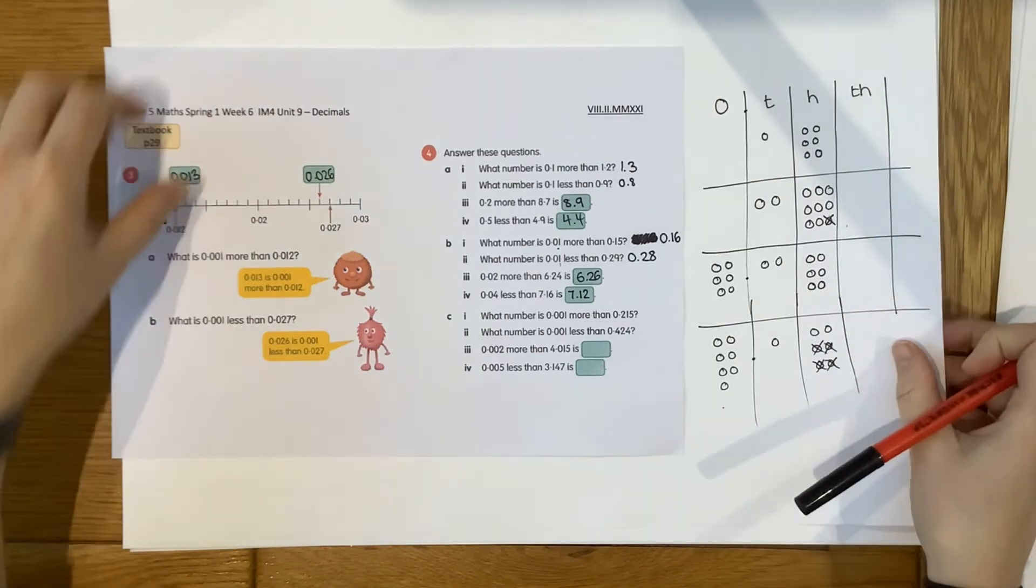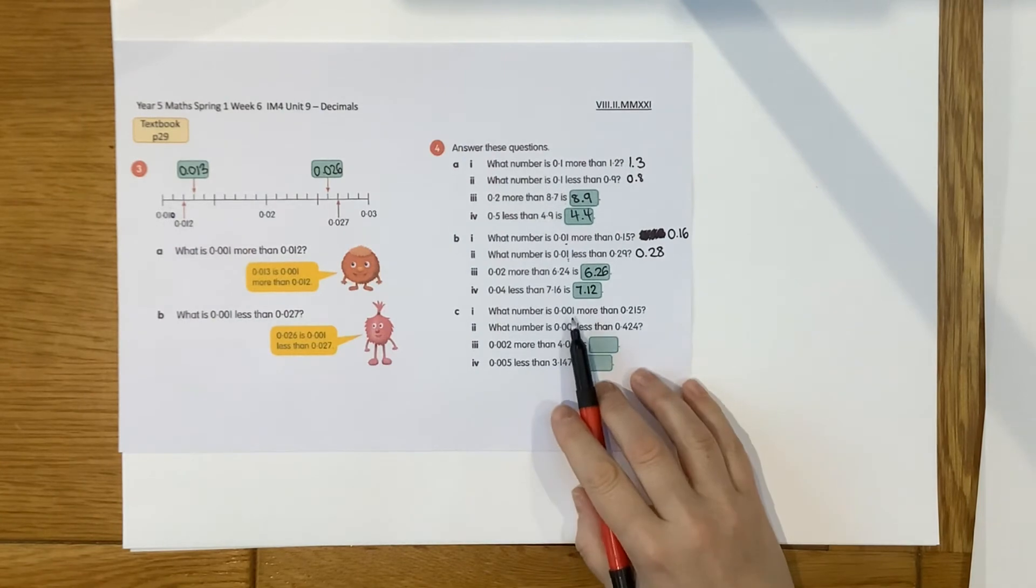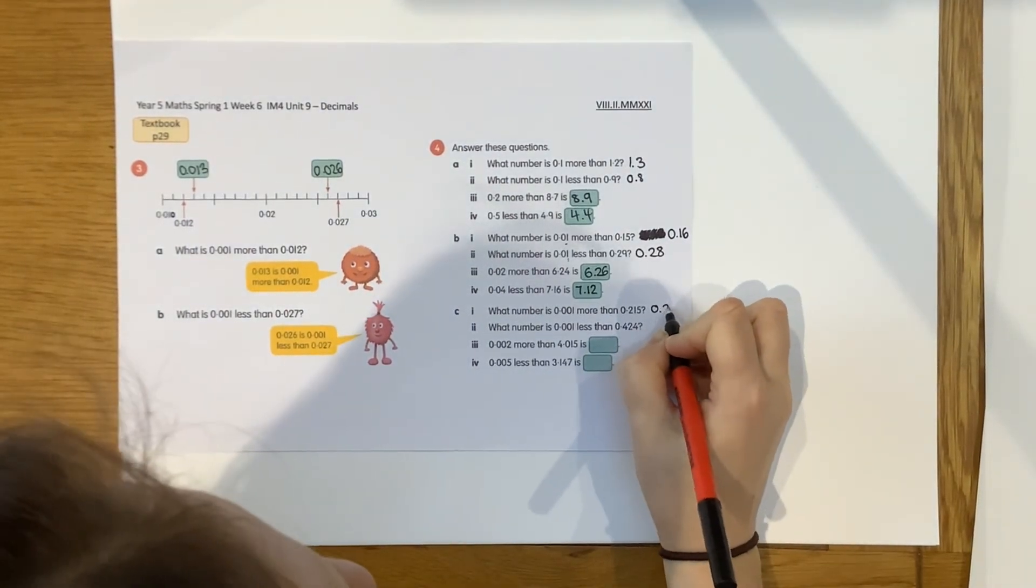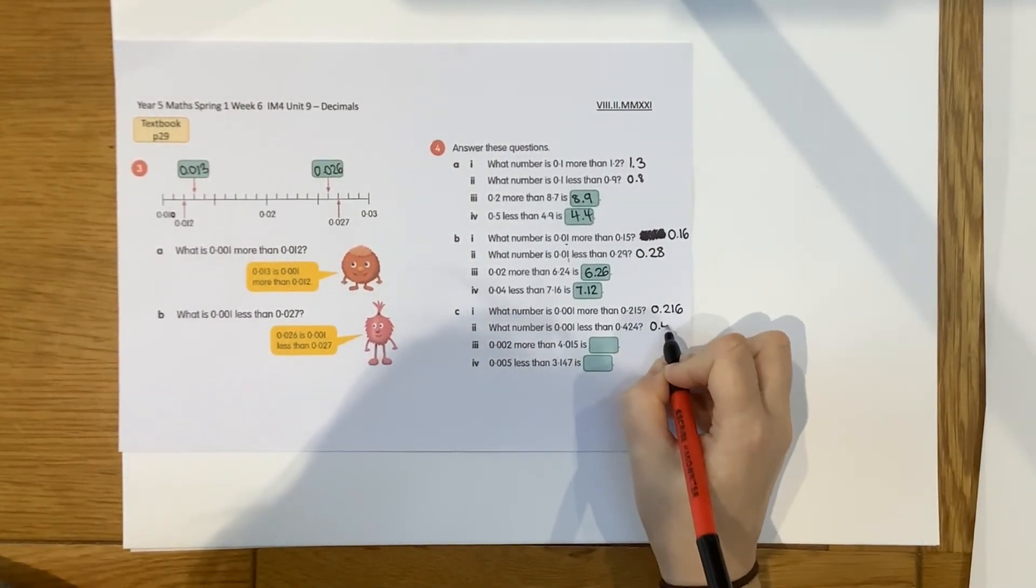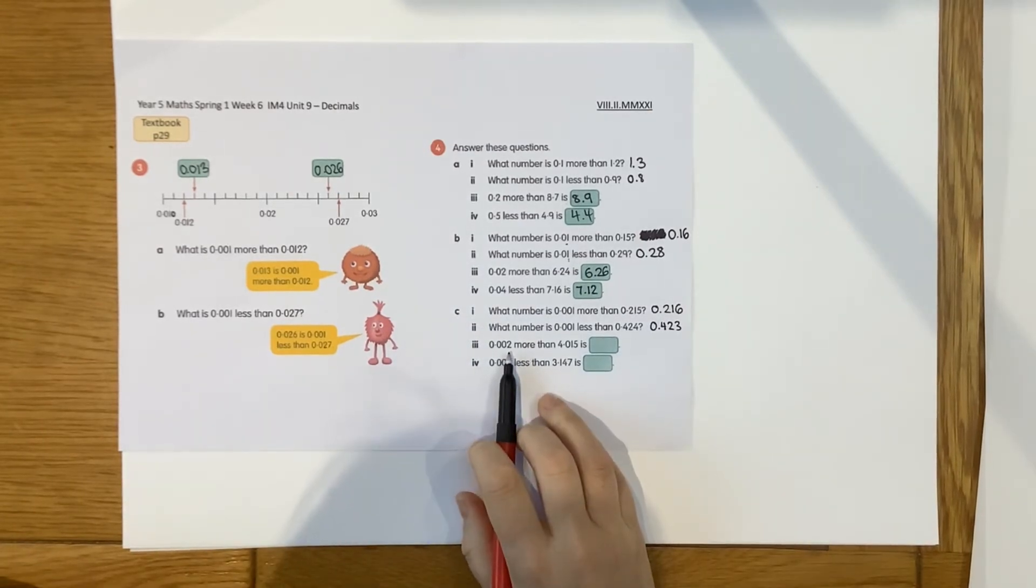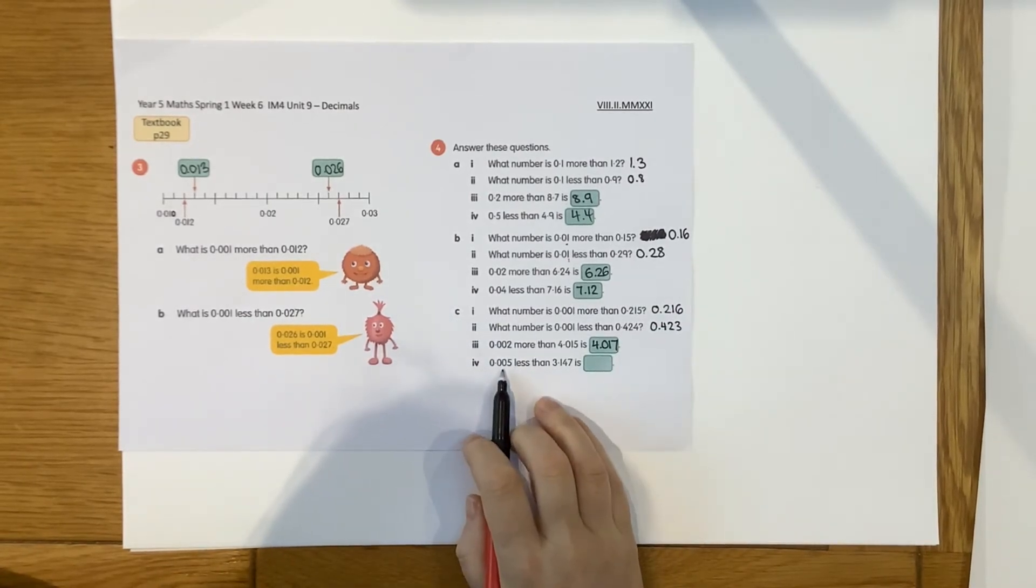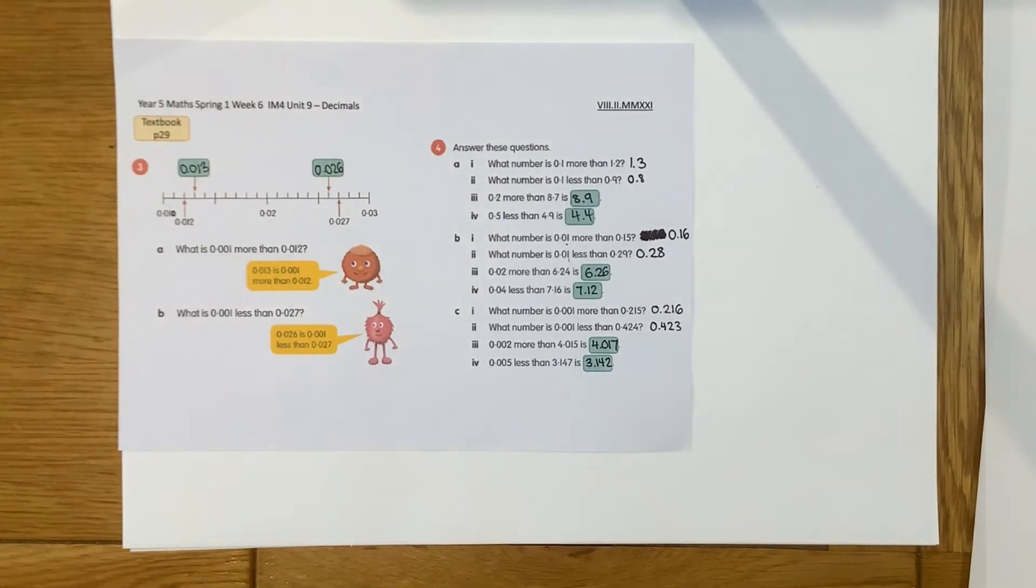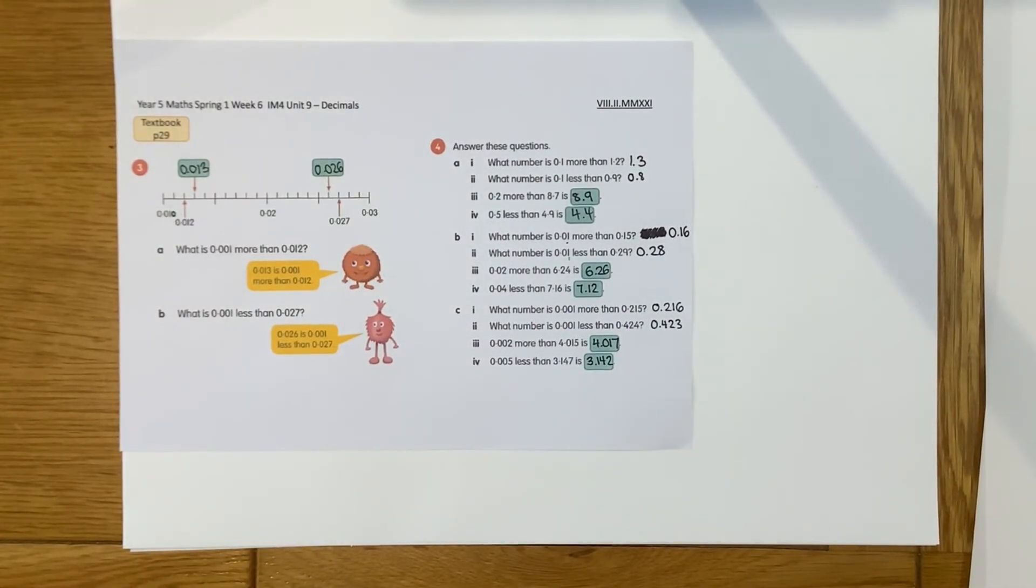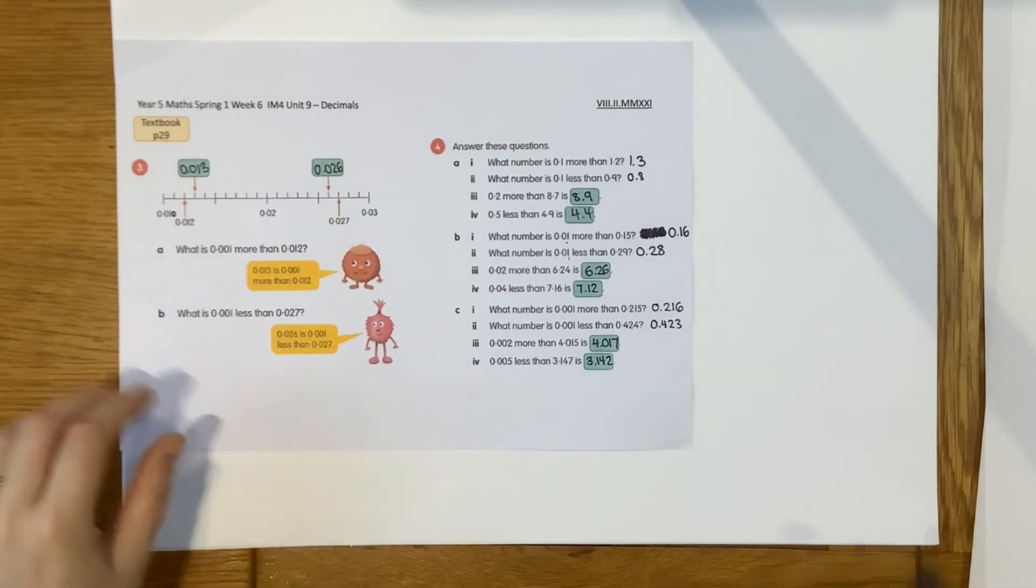Okay, let's have a look at this last one then. Thousandths. So I'm just going to put the answers for this one. So 1 thousandths more than 0.215 is 0.216. 1 thousandth less than 0.424 is 0.423. 2 thousandths more than 4.015 is 4.017. And 5 thousandths less than 3.147 is 3.142. Okay, how did you get on? So we've looked at two different ways of doing it then. We've looked at using a number line. We've looked at using a place value grid. Either of those are absolutely fine to help you with these questions.